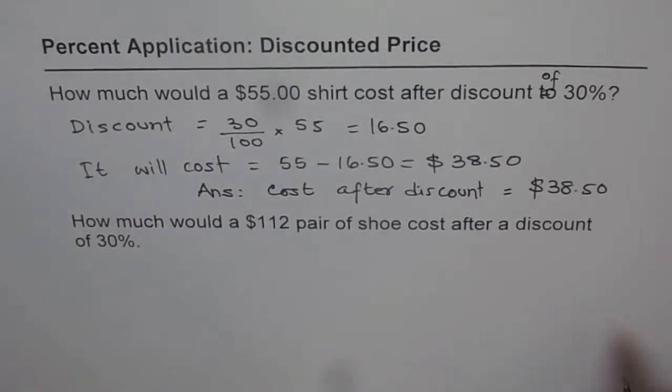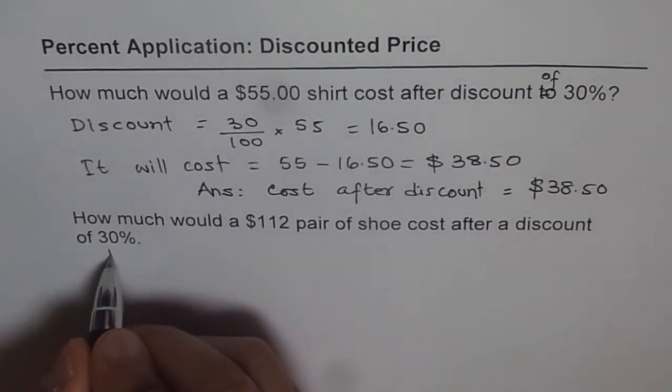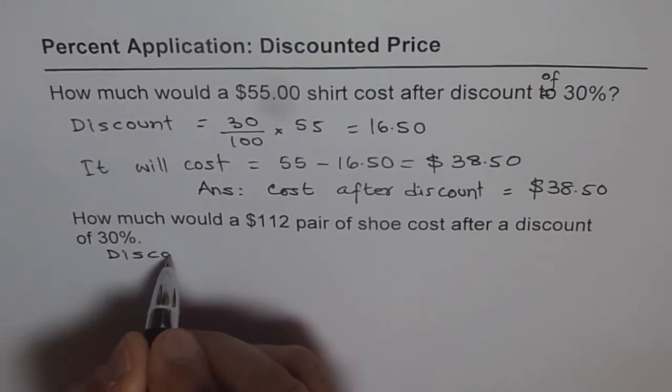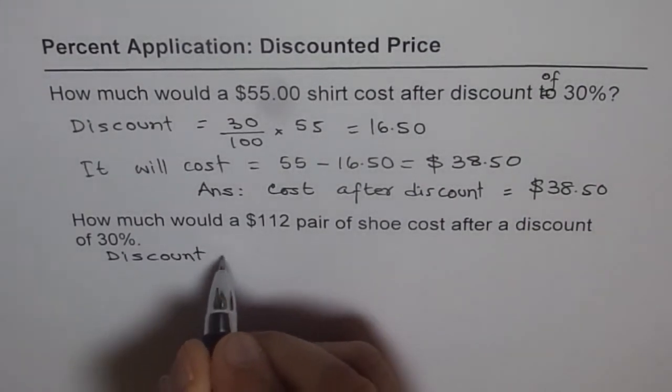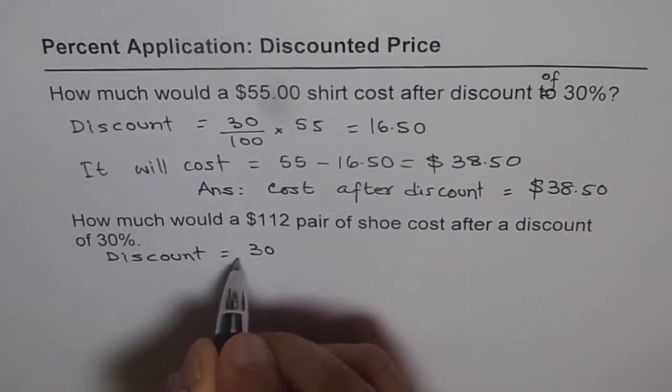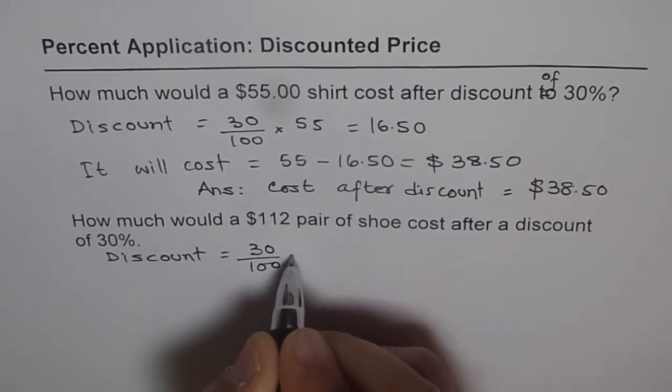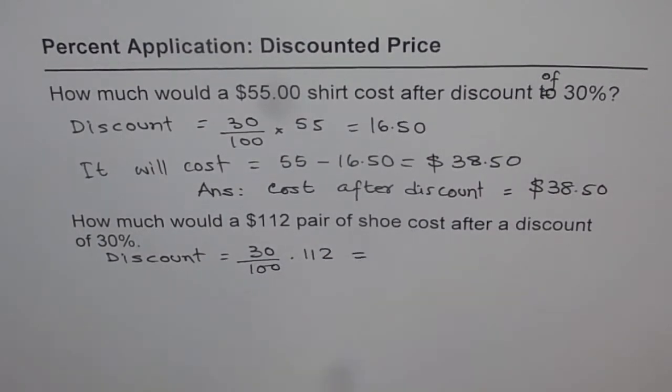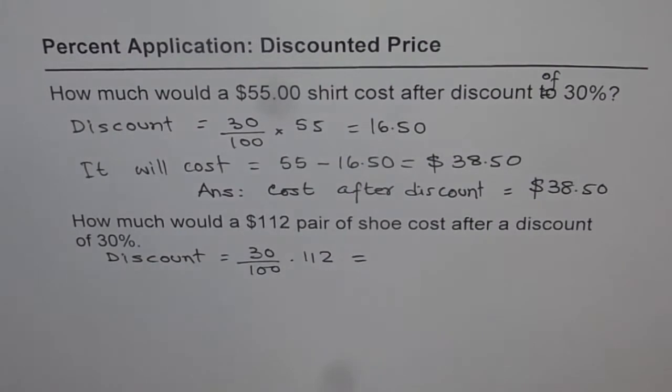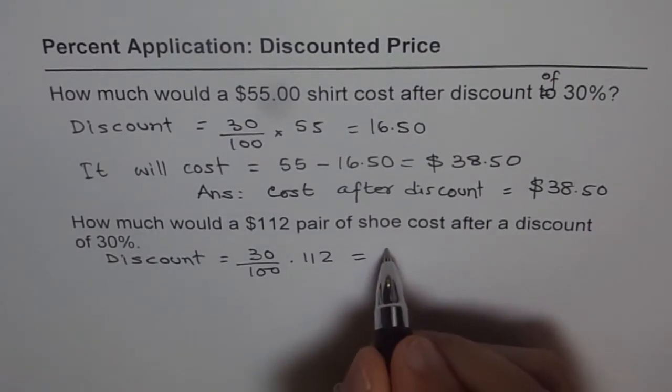First find discount just as we did. Discount equals 30%, that means 30 over 100 of $112. Calculate: it is 30 divided by 100 and then multiply by 112 to get $33.60.